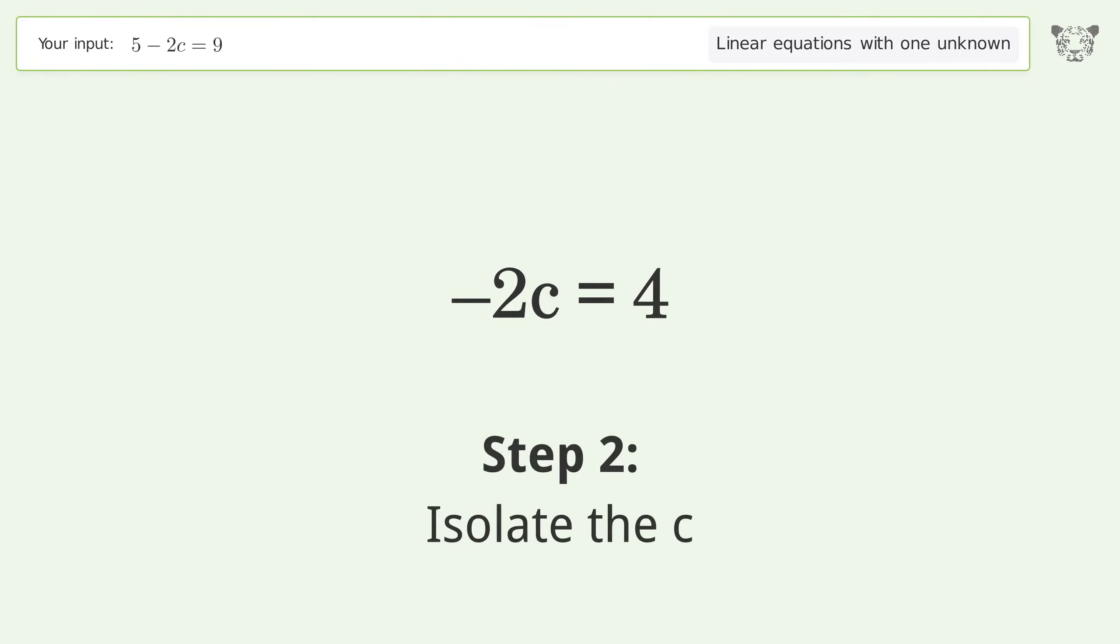Isolate the c. Divide both sides by negative 2. Cancel out the negatives.